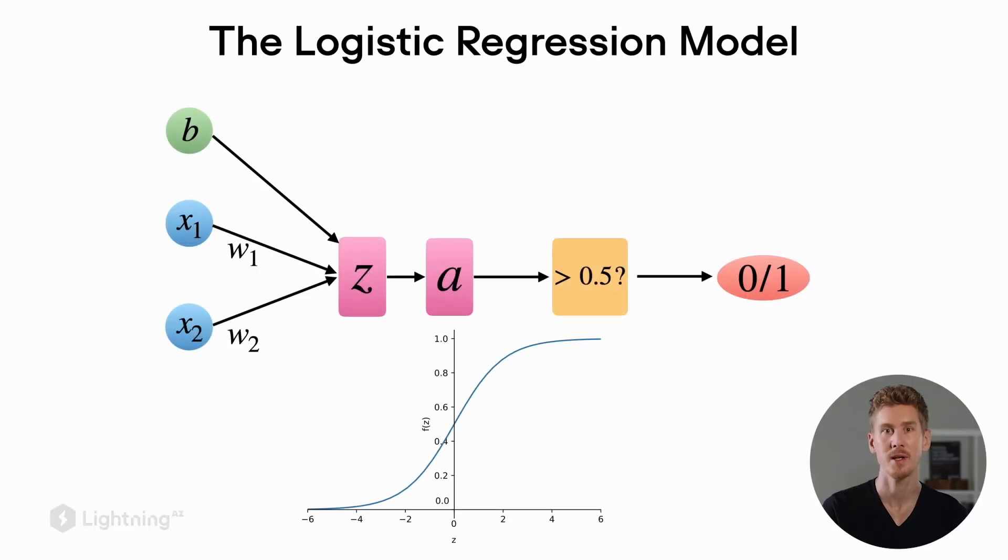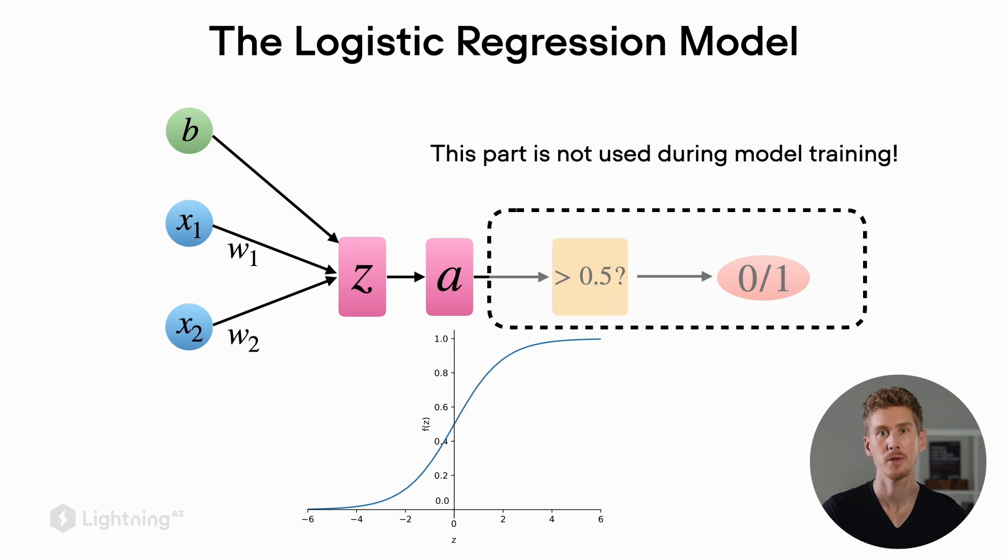Before, we looked at logistic regression in this more summarized or abstract form, where we have the weighted sum, the activation function, a threshold function, and then the class label that comes out of it. We also said that this part here on the right, the threshold function and the class label output, is not part of the logistic regression training.